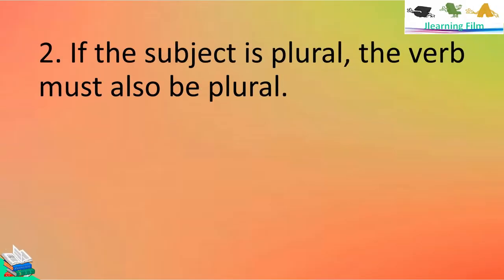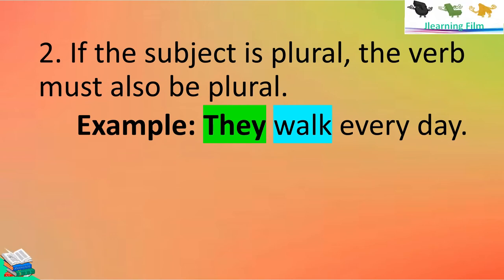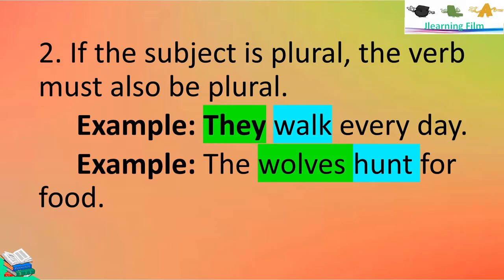Rule number two: if the subject is plural, the verb must also be plural. For example, 'They walk every day.' They is plural and walk is also plural. Another example: 'Do wolves hunt for food?' Wolves is the subject, which is plural, and the verb is hunt, which is also plural.